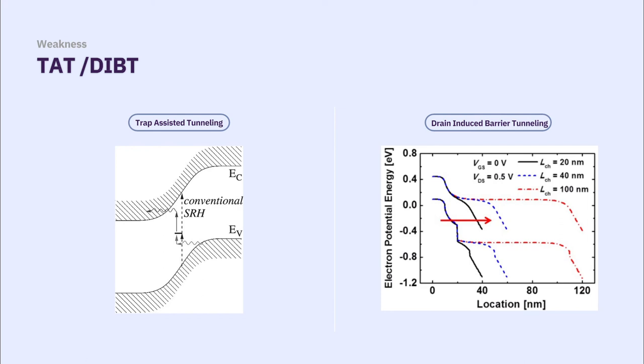First, trap-assisted tunneling. During the semiconductor fabrication process, various factors create energy levels in which carriers can exist between energy gaps. Here, we call the energy level trap. Traps make carriers move in off state and make it easier to tunnel, resulting in a higher current in off state. I said before, this transistor has strength at low off current.